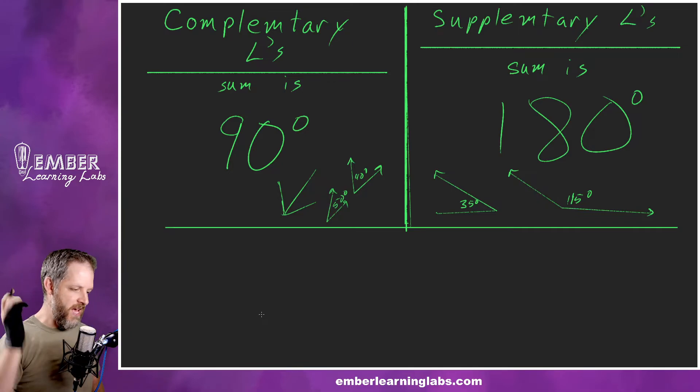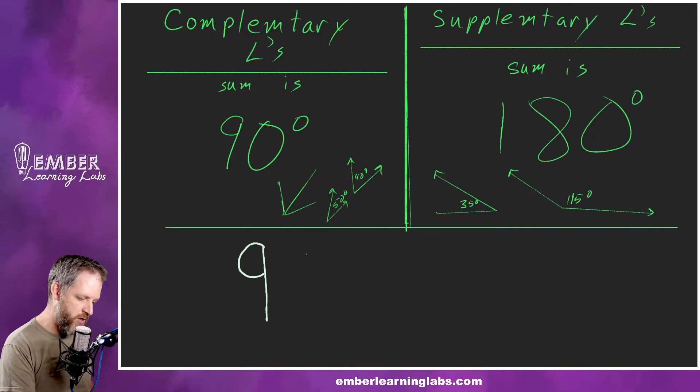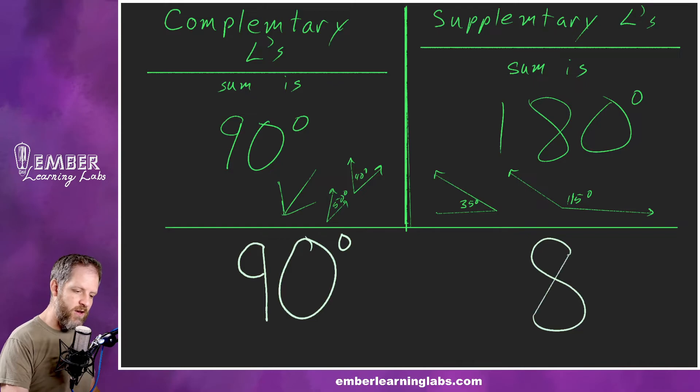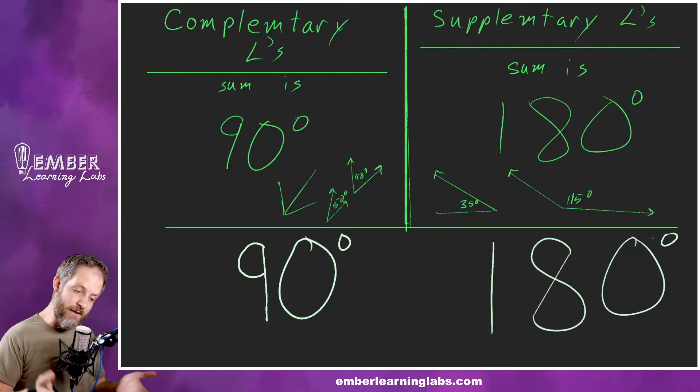So what I learned from a special education teacher is a way to keep these two separate, and it's super great. Complementary, the word complementary starts with a C, right? So draw a C for complementary, and then 90 degrees. C to 90. Complementary, 90 degrees. Now supplementary, we can do a similar thing. Supplementary starts with an S, and I bet you can see where this is going because we can turn that into an eight and make it 180 degrees. So supplementary angles equal 180. I love it. It's a great way to remember it.